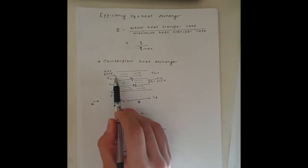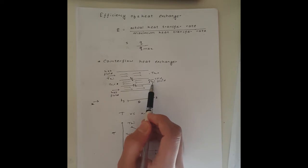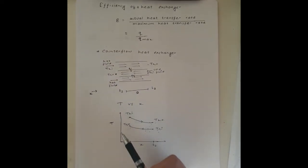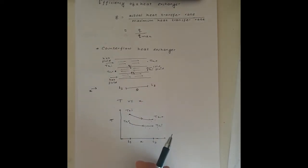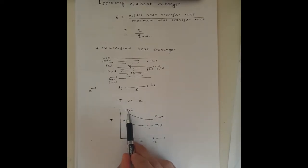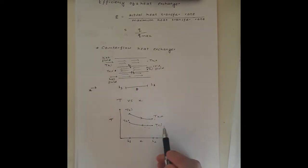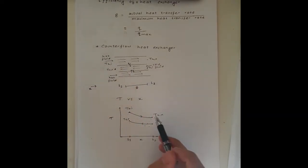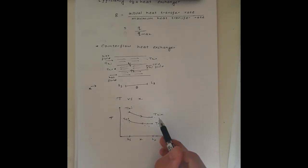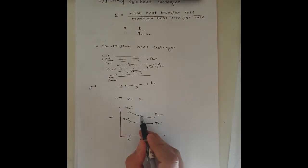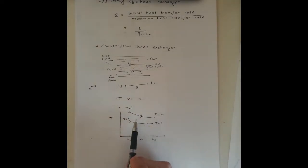We can see this more clearly in the T versus X diagram, where T is the temperature and X is the position along the heat exchanger. THI is the maximum temperature in the heat exchanger and TCI is the lowest. The arrows show that the hot fluid moves from left to right and the cold fluid moves from right to left.